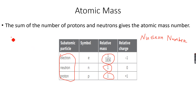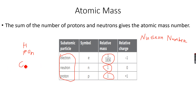For example, hydrogen has a relative atomic mass of one, because it has one proton and zero neutrons — one plus zero equals one. Similarly, oxygen has eight protons and eight neutrons in its nucleus, so eight plus eight is sixteen, giving oxygen a relative atomic mass of sixteen atomic mass units.